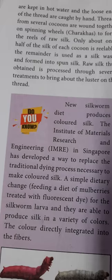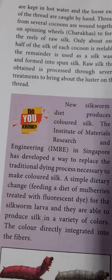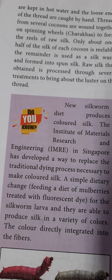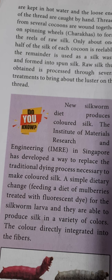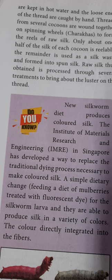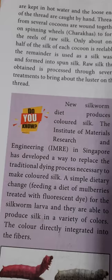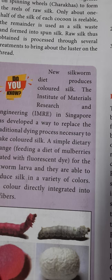A new silkworm diet can produce colored silk. The Institute of Materials Research and Engineering (IMRE) in Singapore has developed a way to replace the traditional dyeing process. By feeding silkworm larvae a mulberry diet containing fluorescent dye, the larvae are able to produce silk in different colors, with the color directly integrated into the fibers. You can see the different colors here.